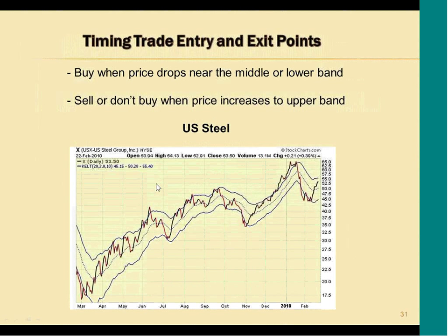The Keltner channels act as an overbought/oversold indicator. When the price of the stock is trading near the upper channel, the stock is getting overbought. When the stock is trading near the middle or lower channel, the stock is getting oversold. We don't want to buy when the stock is trading near the upper channel because it's probably going to retrace back towards the middle or lower channel. Here's a price chart for U.S. Steel — when the stock gets overbought it usually retraces, and when it gets oversold near the lower channel, there's usually a rally that follows.